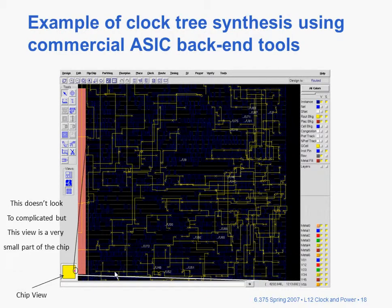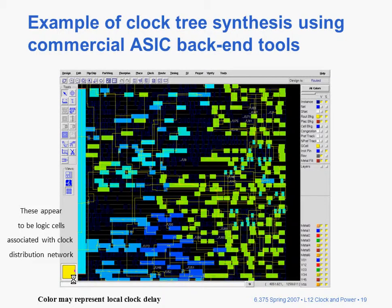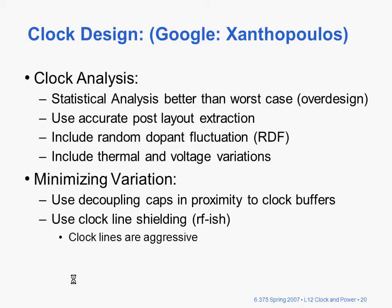The example doesn't look very complicated because it's not very big — it's only a tiny small red portion of this overall large chip. Analysis tools would provide an idea of what the delay is going to look like at different registers. With respect to clock analysis, it's better to use statistical analysis than worst case, since worst case tends to lead to something that's over-designed. You should also use the most accurate post-layout extraction.